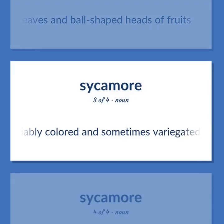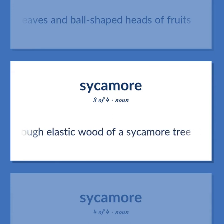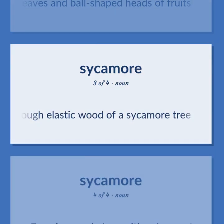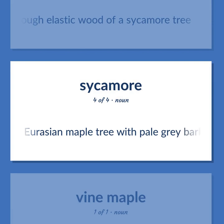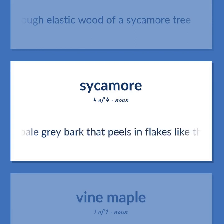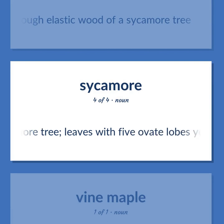Variably colored and sometimes variegated hard tough elastic wood of a sycamore tree. Eurasian maple tree with pale gray bark that peels in flakes like that of a sycamore tree, leaves with five ovate lobes yellow in autumn.